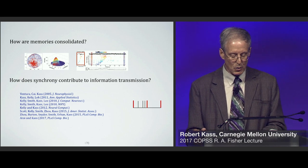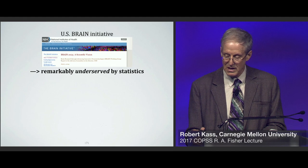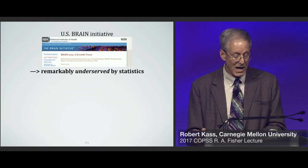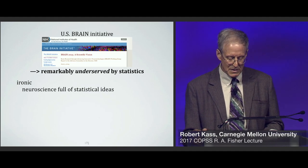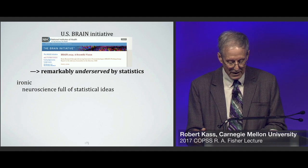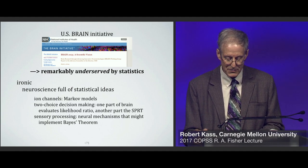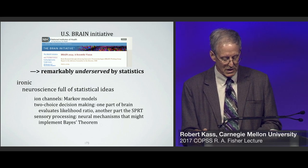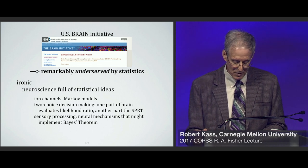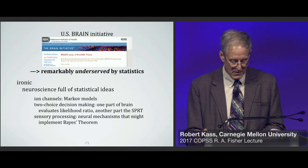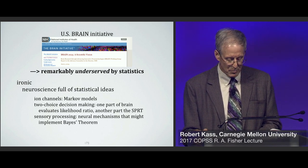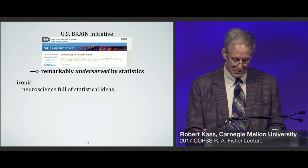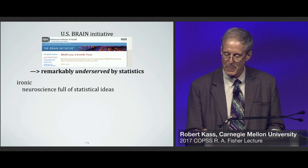I've presented two scientific questions that have posed interesting statistical problems and have led to novel data analytic techniques, discussed in support of my primary message that the brain sciences are remarkably underserved by statistics. Applications of the statistical paradigm in the brain sciences are rare, which is ironic in that neuroscience is full of statistical ideas — for example, Markov models are used to describe ion channels, a theory of two-choice decision making involves computing a sequential probability ratio test, and a popular theory of sensory processing is based on Bayes' theorem.